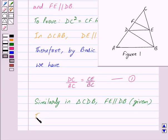Therefore, again by the Basic Proportionality Theorem, we have CF/DC = CE/BC. We mark this as Equation 2.